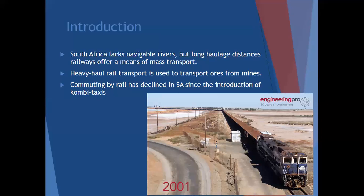Heavy haul rail transport is used to transport ores from mines, like you can see in that picture. This comes from Sishen Mine - it's iron ore. That whole thing is the actual train.